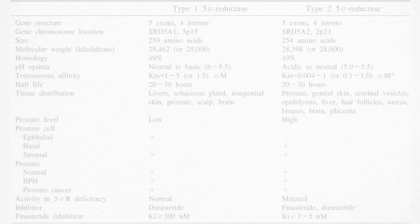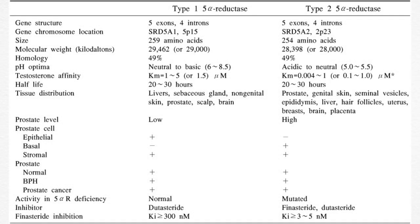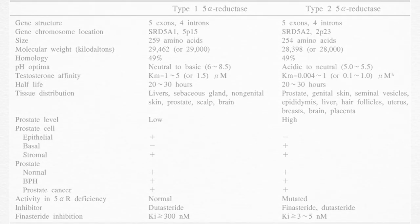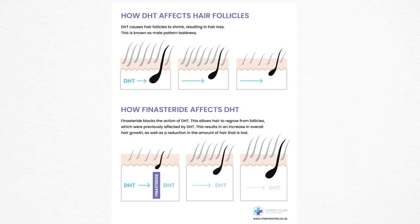5-alpha reductase has two types. Type 1 is produced primarily in the liver and skin and is carried to the prostate via systemic circulation. Type 2 is found in the scalp and prostate. Finasteride prevents the type 2 5-alpha reductase enzyme from turning testosterone into DHT.